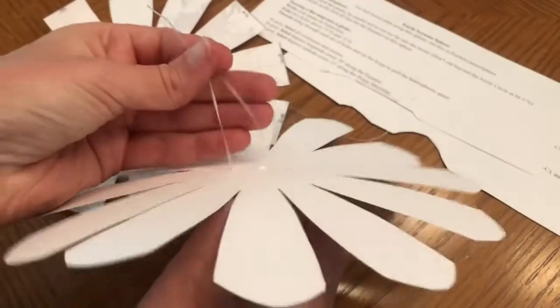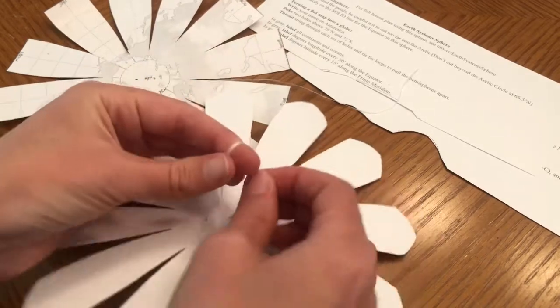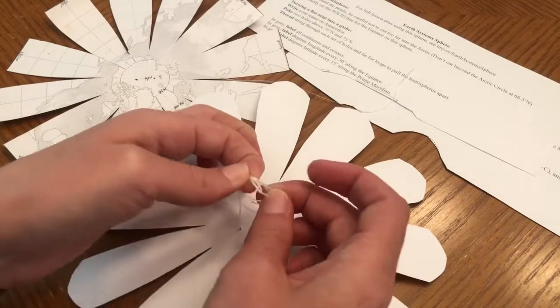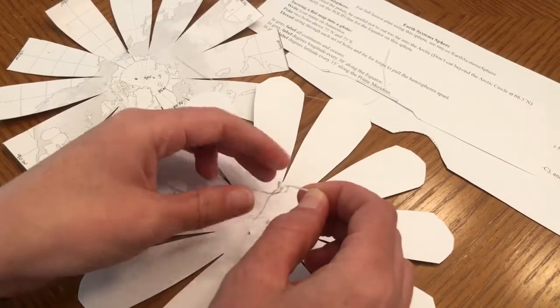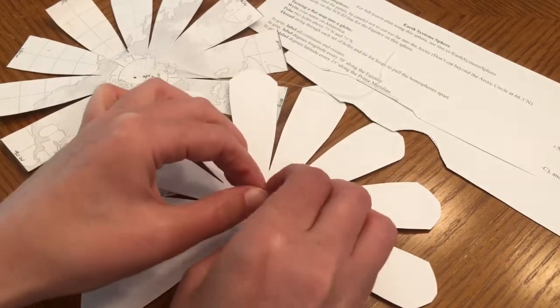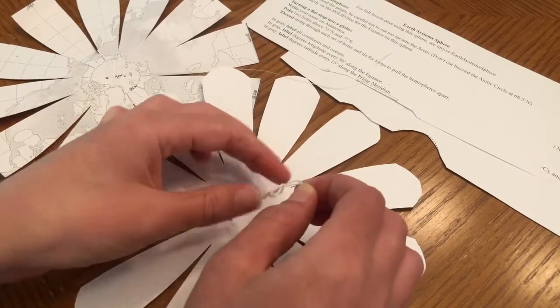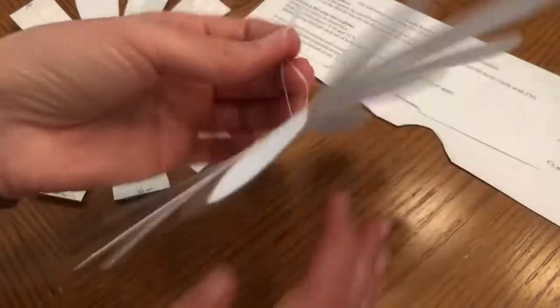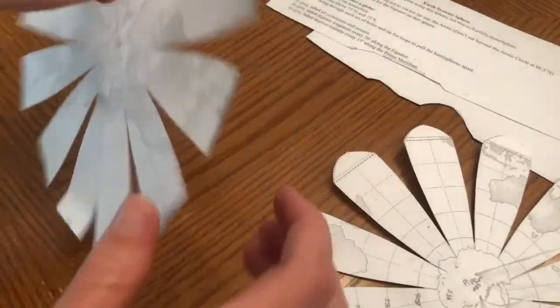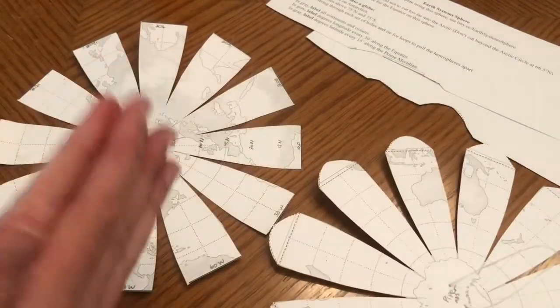What we're going to do is we're going to tie off the ends. I just make a little knot and double it just to make sure. And the same thing on the other one. Now that we have our two loops on both of our hemispheres, we're going to put them together.